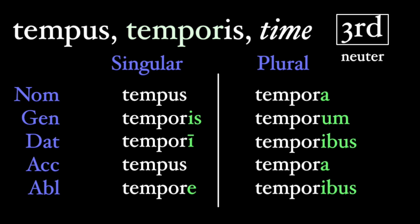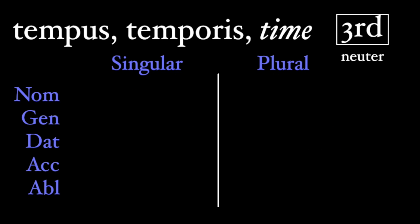You're probably used to the third declension nominative singular looking different, but because of our first rule of neuters, the accusative singular looks different too. Now that we have the full declension, it helps to add translations: 'the time,' or 'a time,' since Latin doesn't differentiate between 'the time,' 'a time,' or even just 'time.'